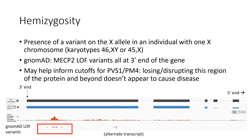Looking at MECP2 loss of function variants in gnomAD, some of which are hemizygous, we can see that they're all clustered at the three prime end of the gene, and so would be predicted to escape nonsense-mediated decay. This little blip of loss of function variants in the middle are related to an alternate transcript.